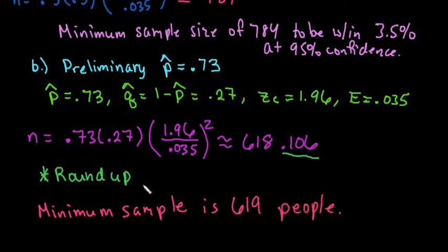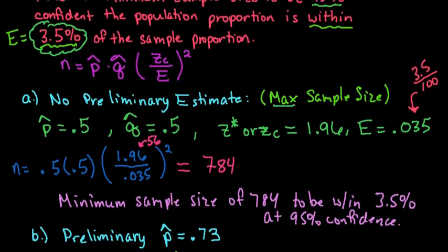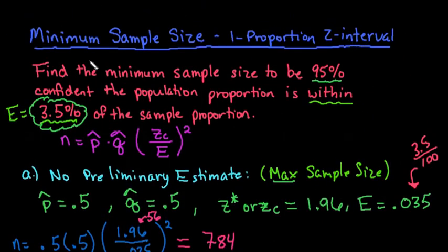For this one, if you notice 619 is not as large. You will always, if you have a preliminary estimate, end up with a smaller sample. So if you want the largest sample that you can have, then you would just use the 0.5 and 0.5. As always, thanks for watching. Please continue to check out all of my content.